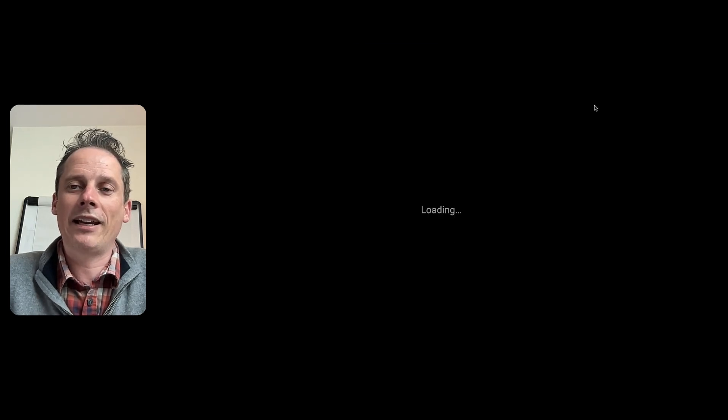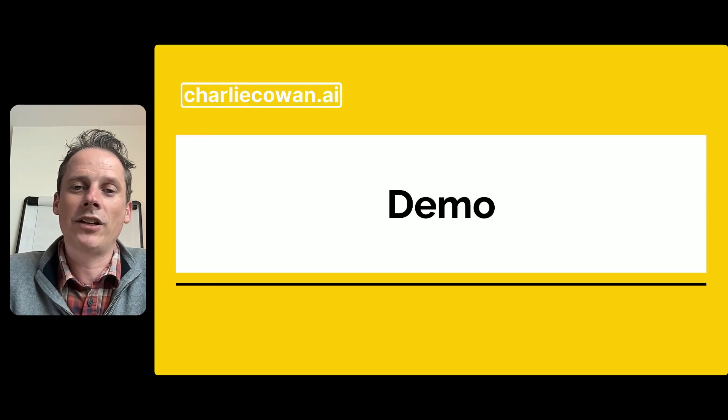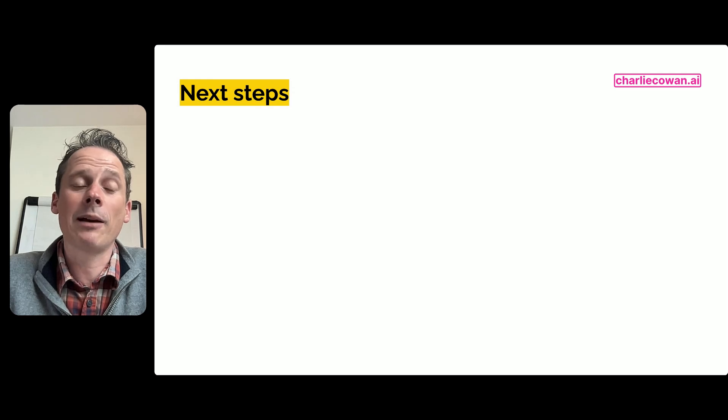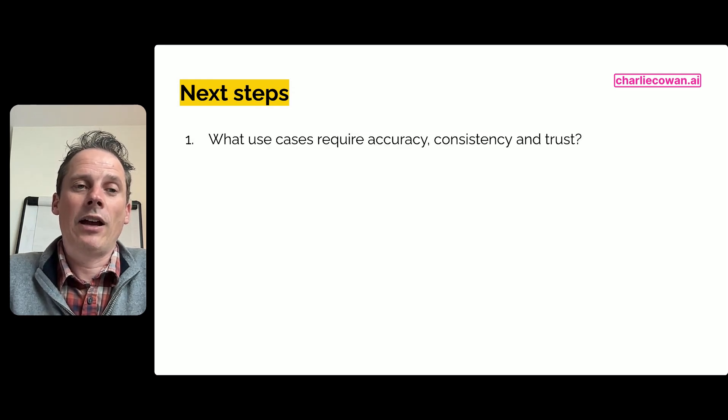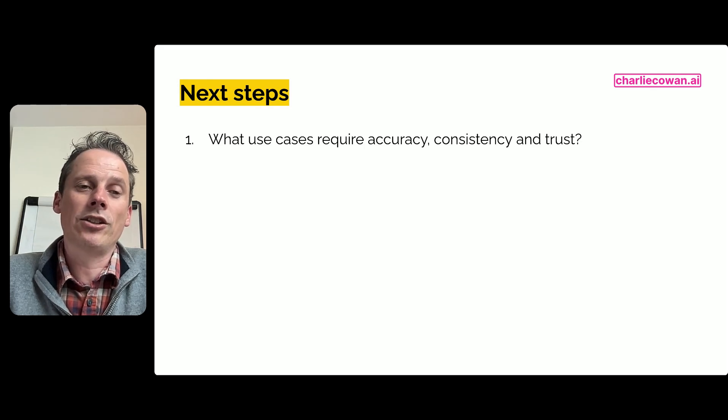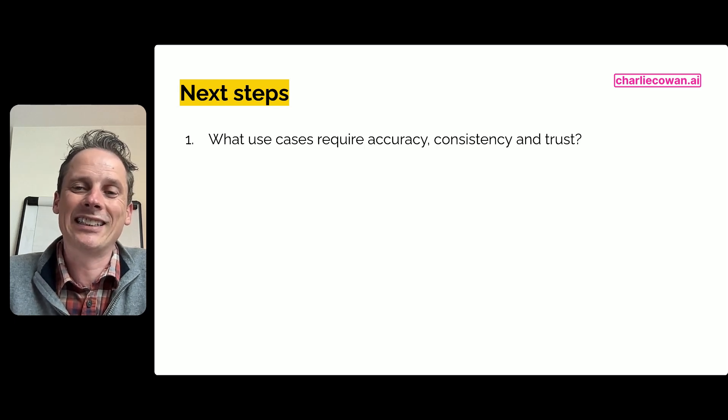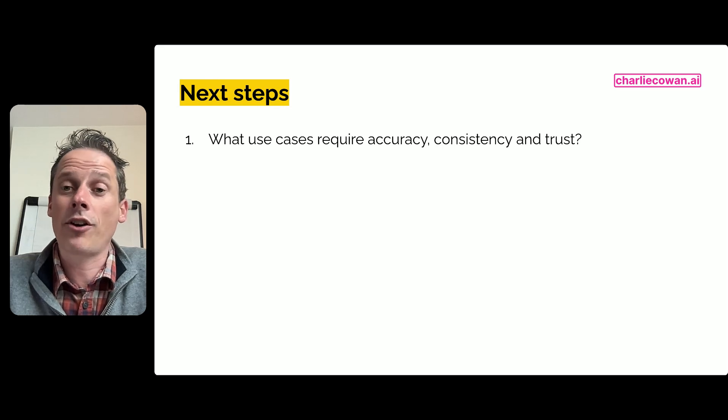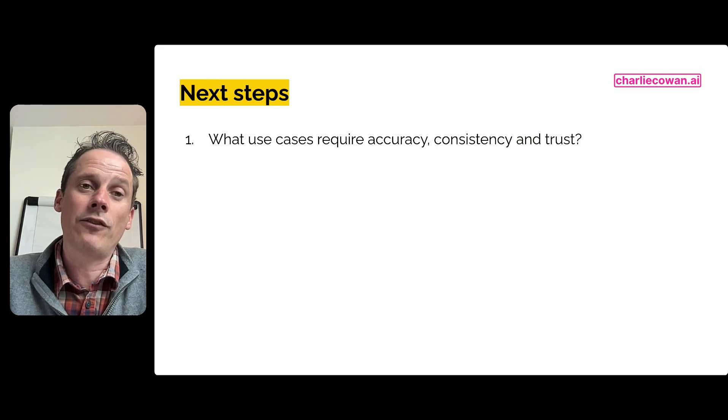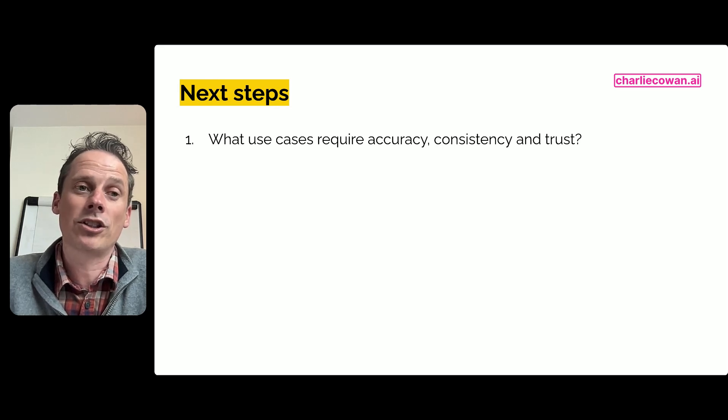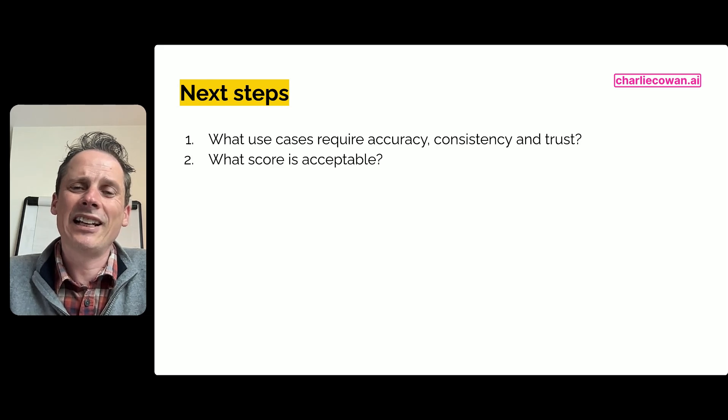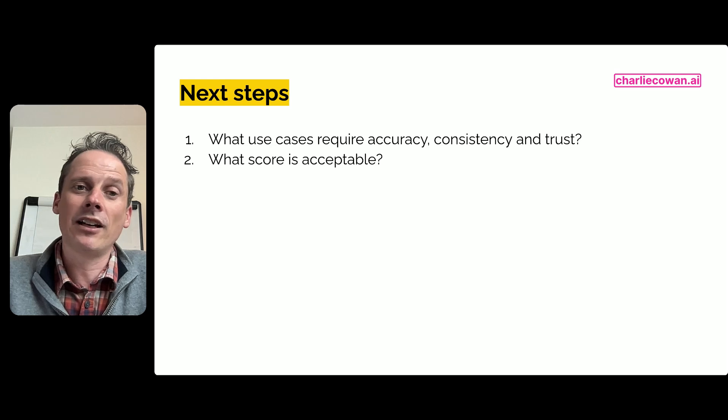So let's just dive back here and wrap up this video. So next steps. Firstly, have a think about which use cases you've got in your organization that require this accuracy, consistency, and trust. Specifically, these may well be things that are either customer or other third party facing, or they are use cases that give your own employees decisions they have to make on how to categorize or respond to a customer.